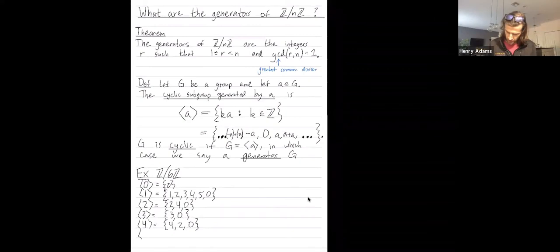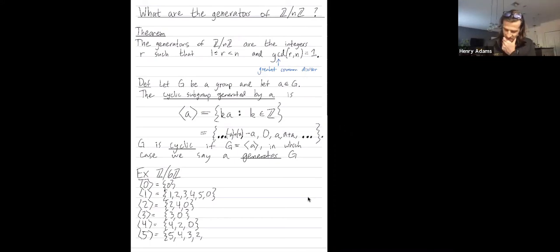And then the cyclic subgroup generated by five. It's five. Five plus five is ten, which mod six is four. Four plus five is nine, which mod six is three. Two plus five is eight, which mod six is two. Two plus five is seven, which mod six is one. And one plus five is six, which mod six is zero.